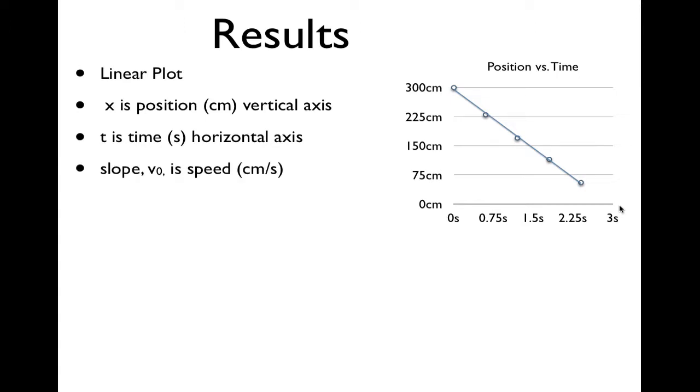The slope, we're going to have a new letter for that. We're going to call it v with a subscript zero, and we'll call that v₀, which is the speed in centimeters per second. A positive slope means the car is moving forward, not speeding up. A negative slope means moving backwards, not slowing down.